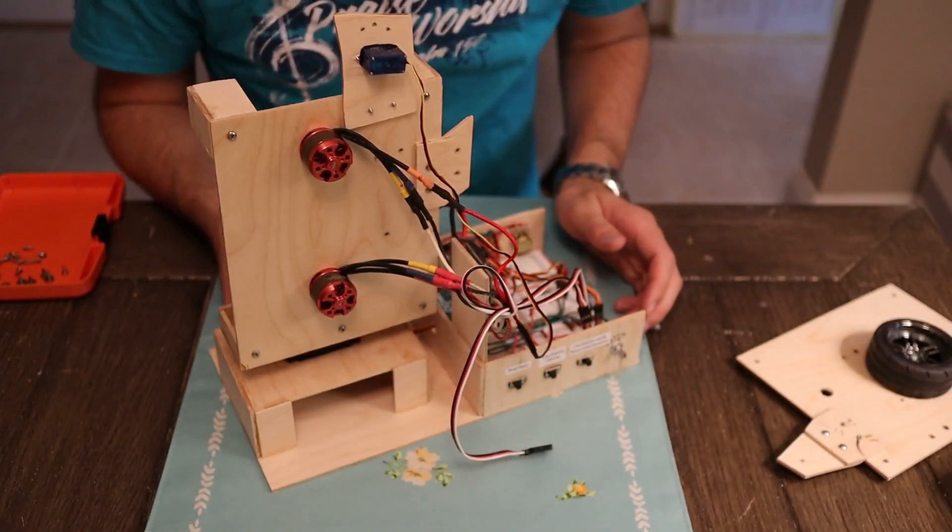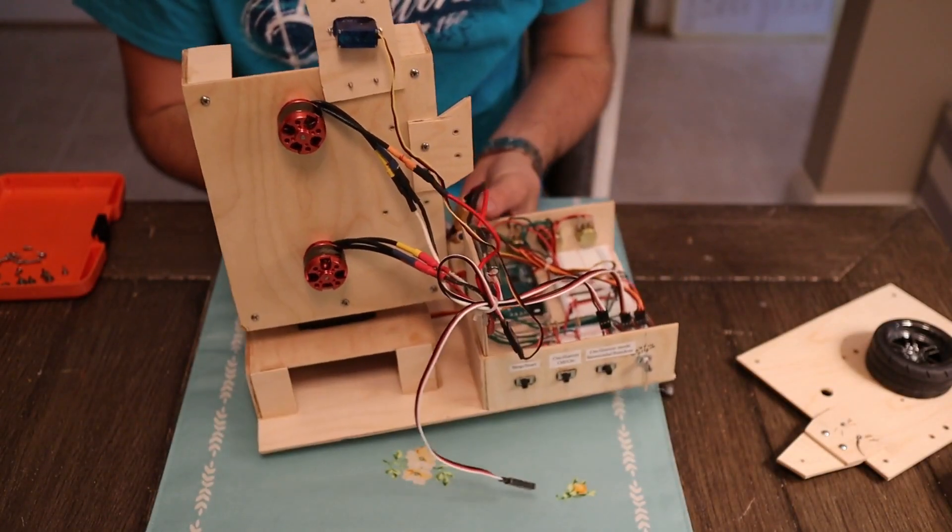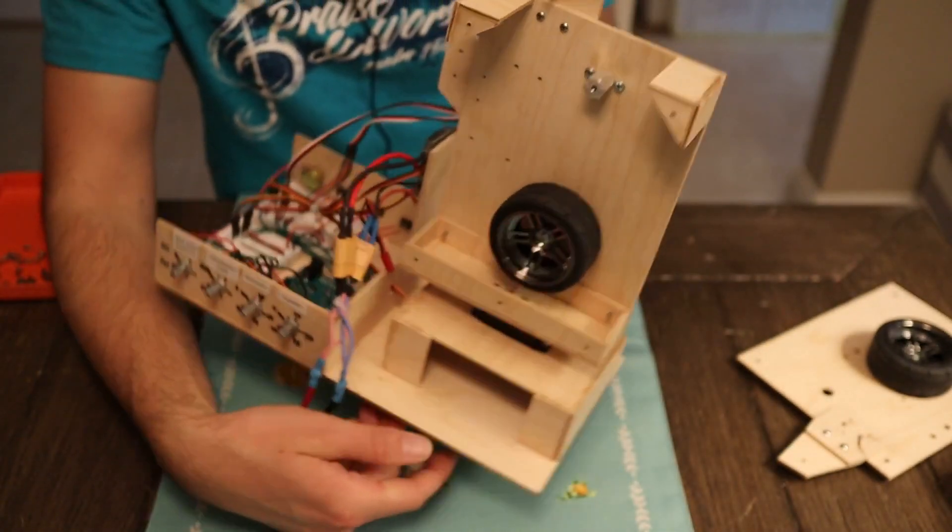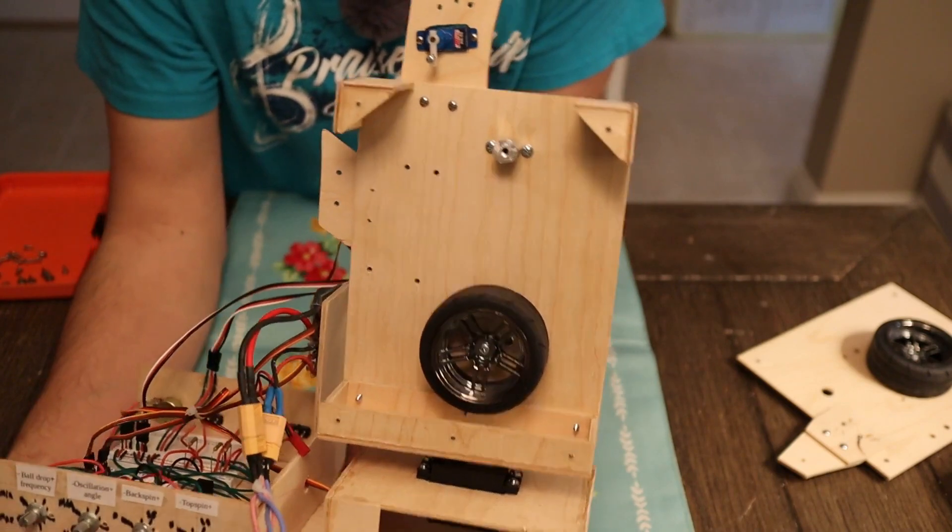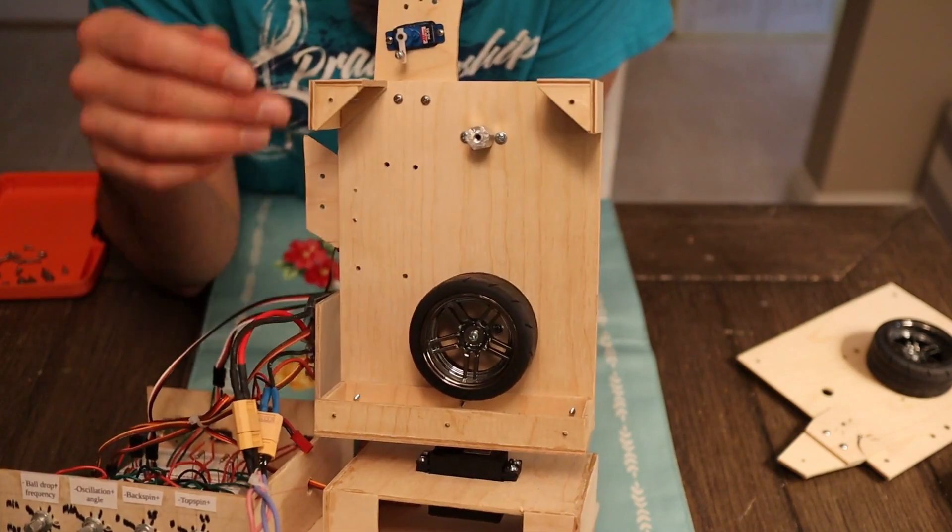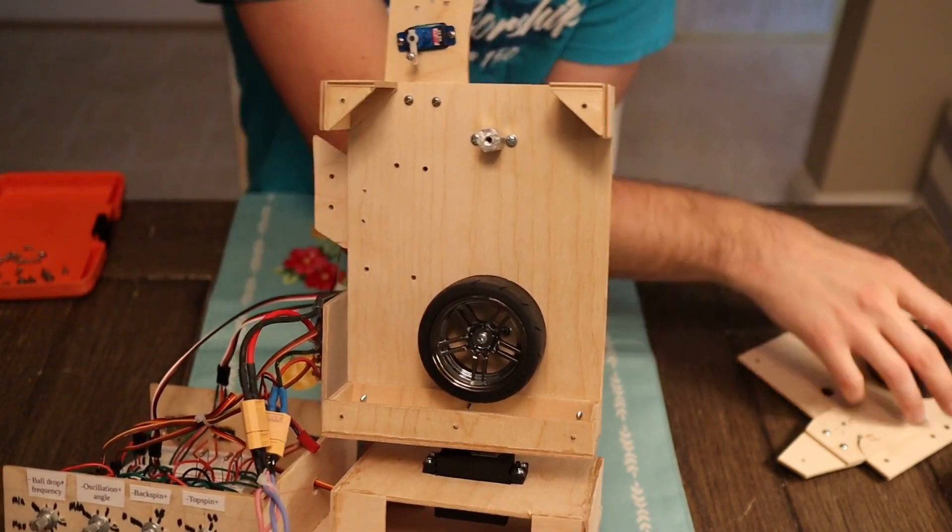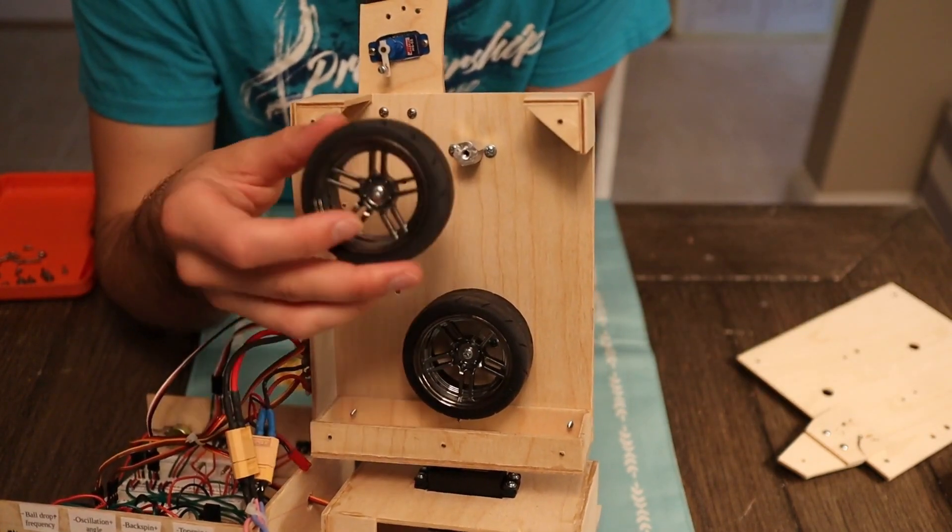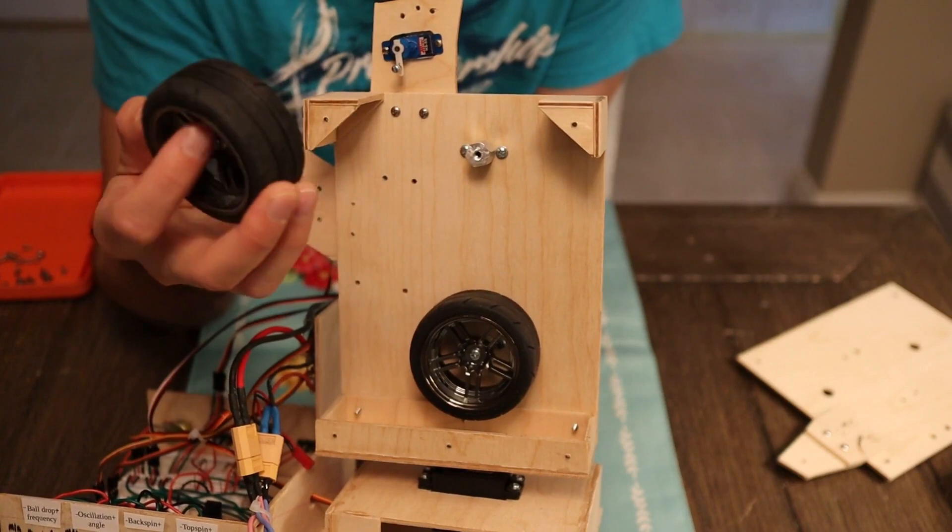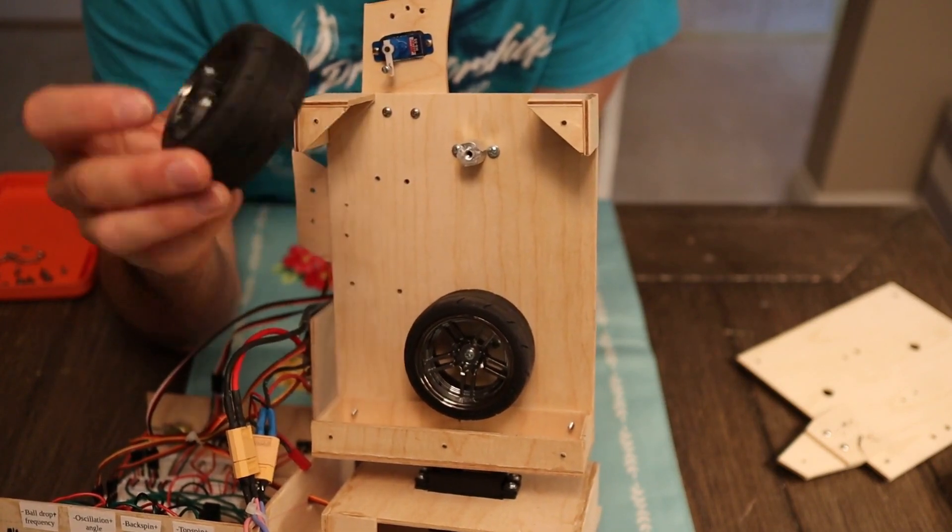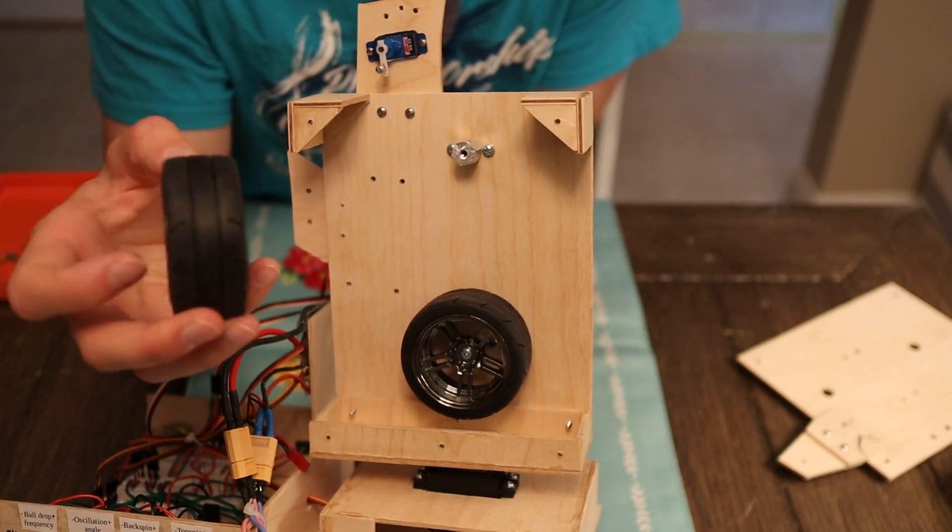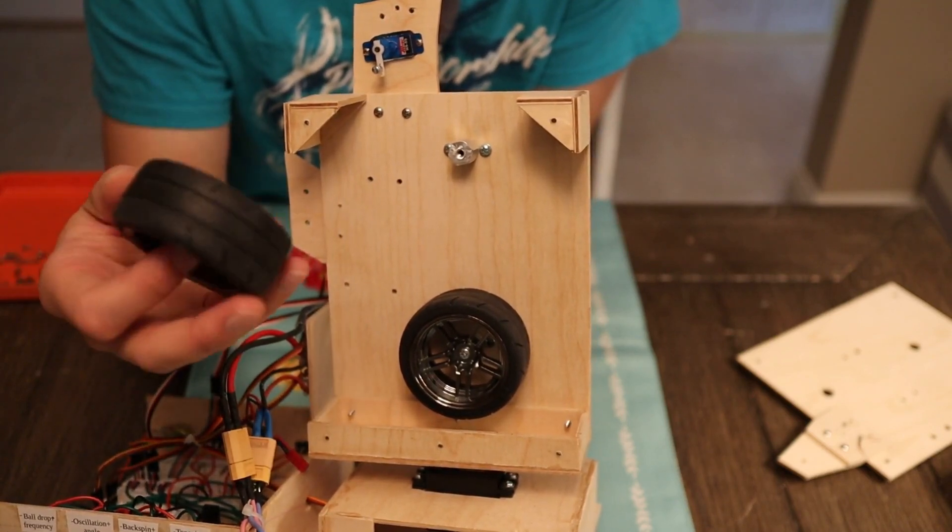This is the main part of the ping pong robot. So right now I have this not put together all the way. I have one of the wheels installed, and then the other one I'm going to show you. So these are radio control car wheels. I believe they're one-tenth scale. They have a soft rubber compound, and they do have a bit of a tread, which I found at first would leave some scuffs in the ball.